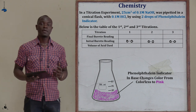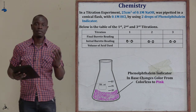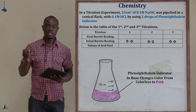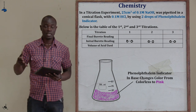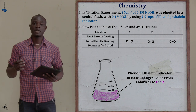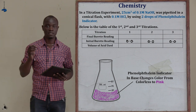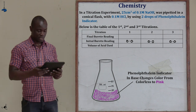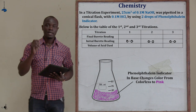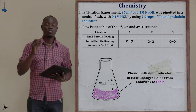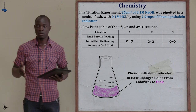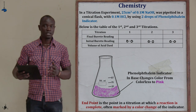In all our experiments — experiment 1, 2, and 3 — we are going to assume that the initial burette reading is 0.0. The final burette reading is the reading we record after the end point of the reaction has been reached.